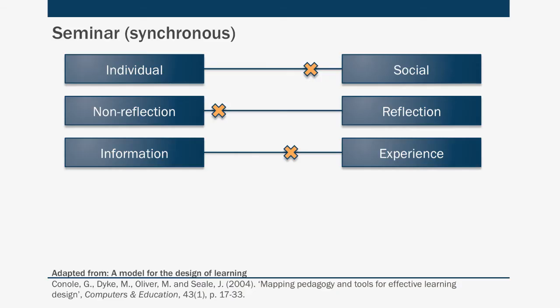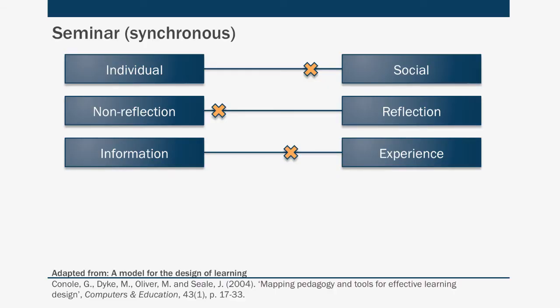Here are a couple of examples from the paper, starting with a seminar — assumed here to be a synchronous seminar. It's a social learning experience where you're learning from others' perceptions of whatever you're studying. It's largely non-reflective in the synchronous space because everything is happening at the same time — you don't have time to pause and reflect. But it is more of an experiential learning approach than information-giving; there's an element of learning through discussion and unpicking the concept being discussed.